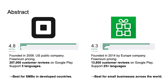If we compare these two companies, Square is founded in 2009 in the US and having more than 200,000 customer reviews on Google Play, it is a bigger company compared to Royverse, and their POS application is the best for small and medium businesses in developed countries. While Royverse was founded in 2015 in Europe, their POS is specialized for small businesses all across the world, supporting 25 plus languages, and they also have enough number of customer reviews on Google Play.